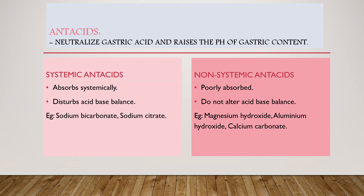Examples of non-systemic antacids are magnesium hydroxide, aluminum hydroxide, and calcium carbonate. These antacids are no longer used for healing peptic ulcers. They are employed for the treatment of acidity, usually as over-the-counter preparations, and also for non-ulcer dyspepsia and minor episodes of heartburn.